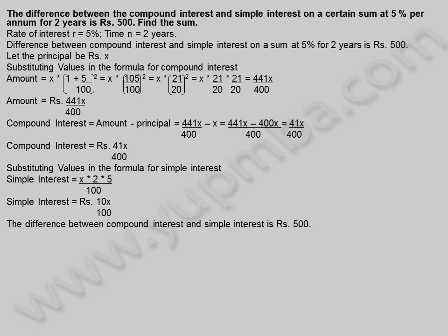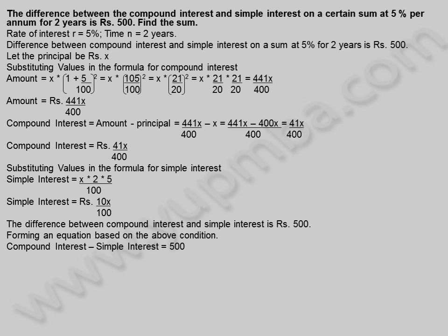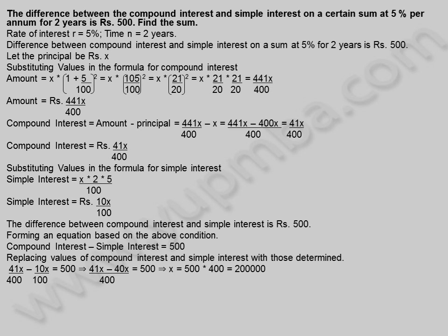The difference between compound interest and simple interest is 500 rupees. Forming an equation: compound interest minus simple interest equals 500. Replacing values: 41X by 400 minus 10X by 100 equals 500, giving (41X minus 40X) divided by 400 equals 500, so X equals 500 into 400, which equals 2 lakhs. Hence the principle is 2 lakhs rupees. Let us see another example.